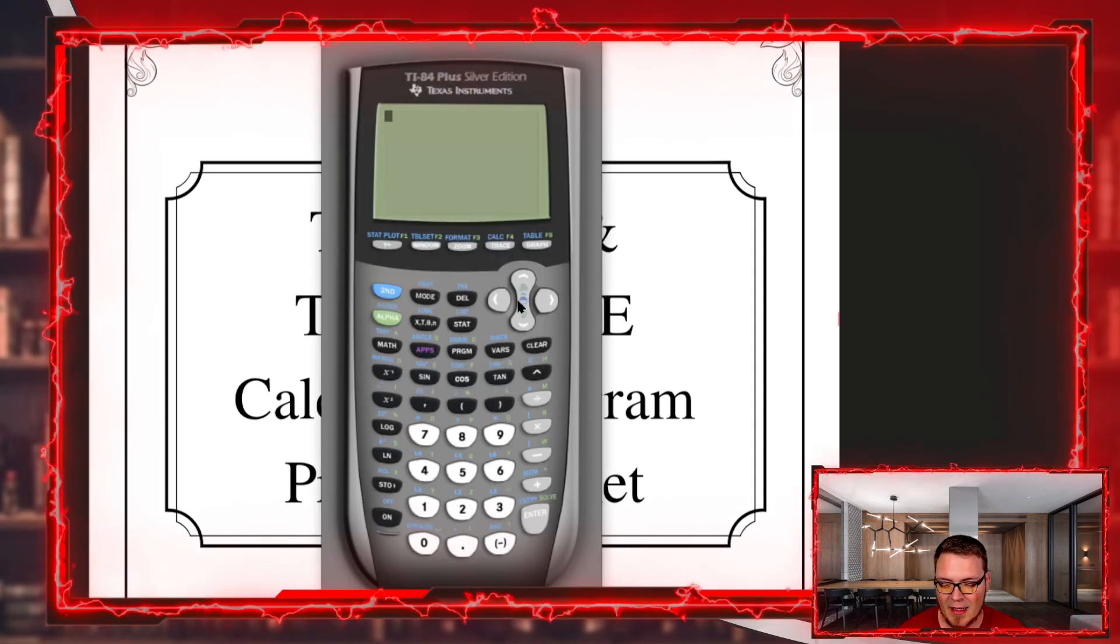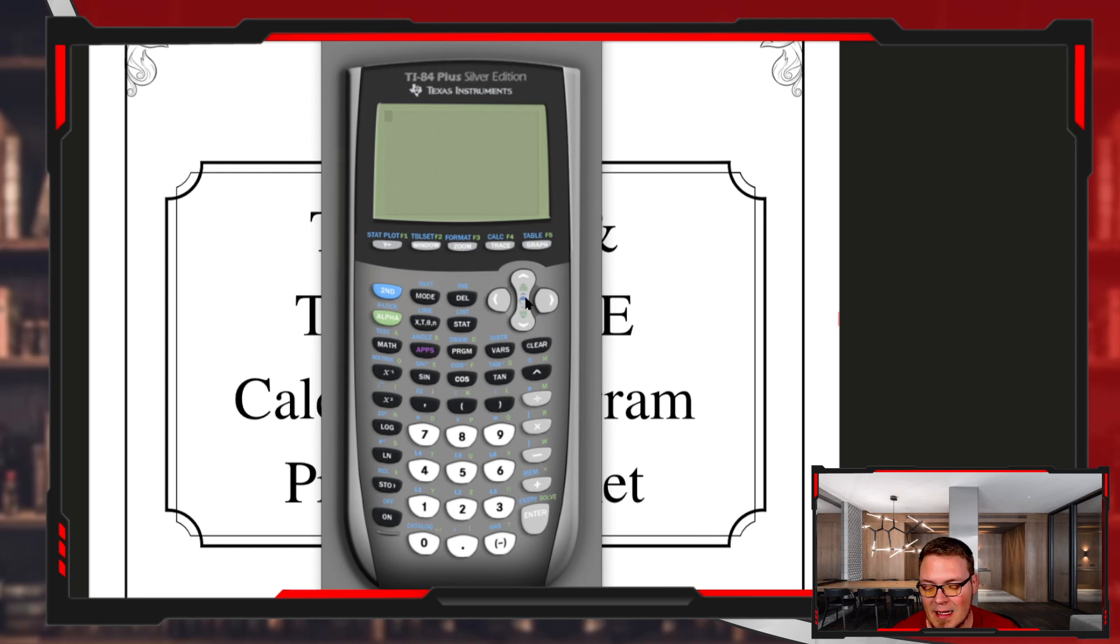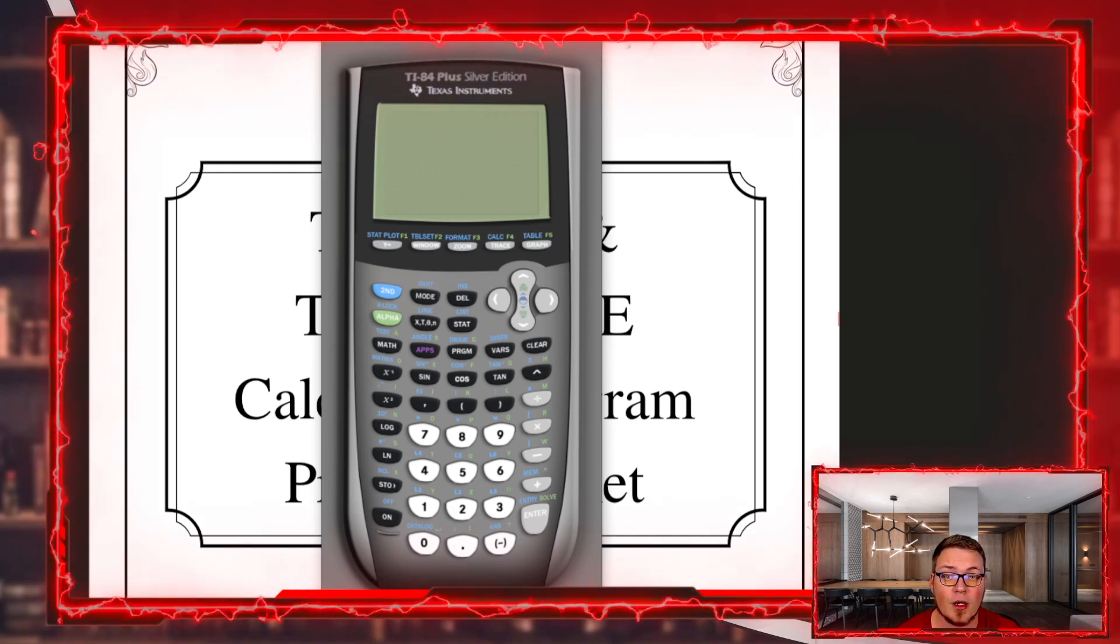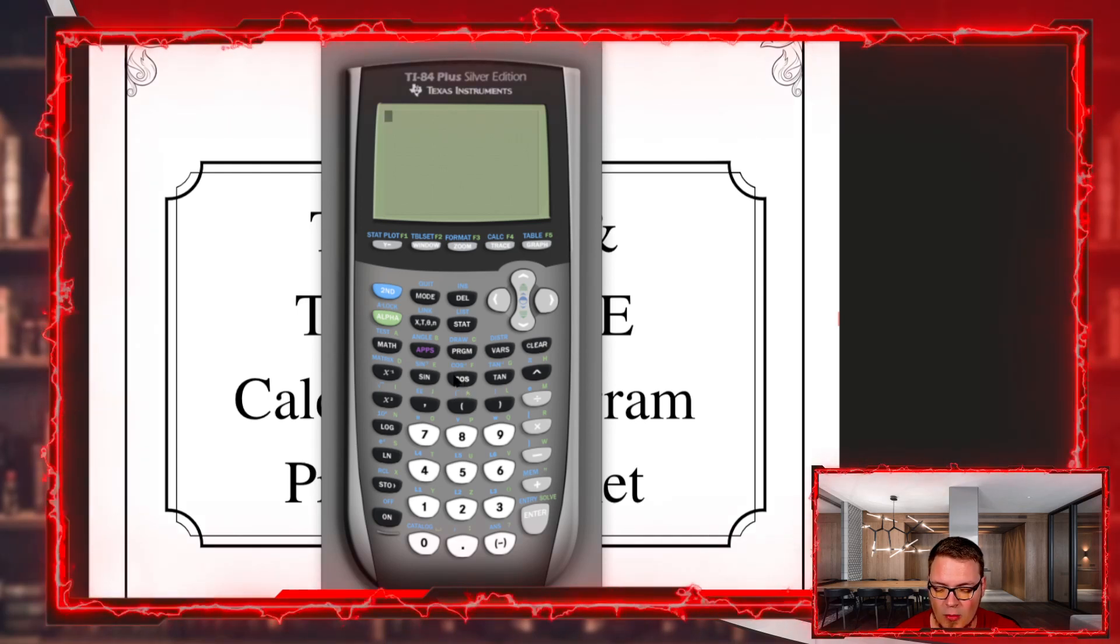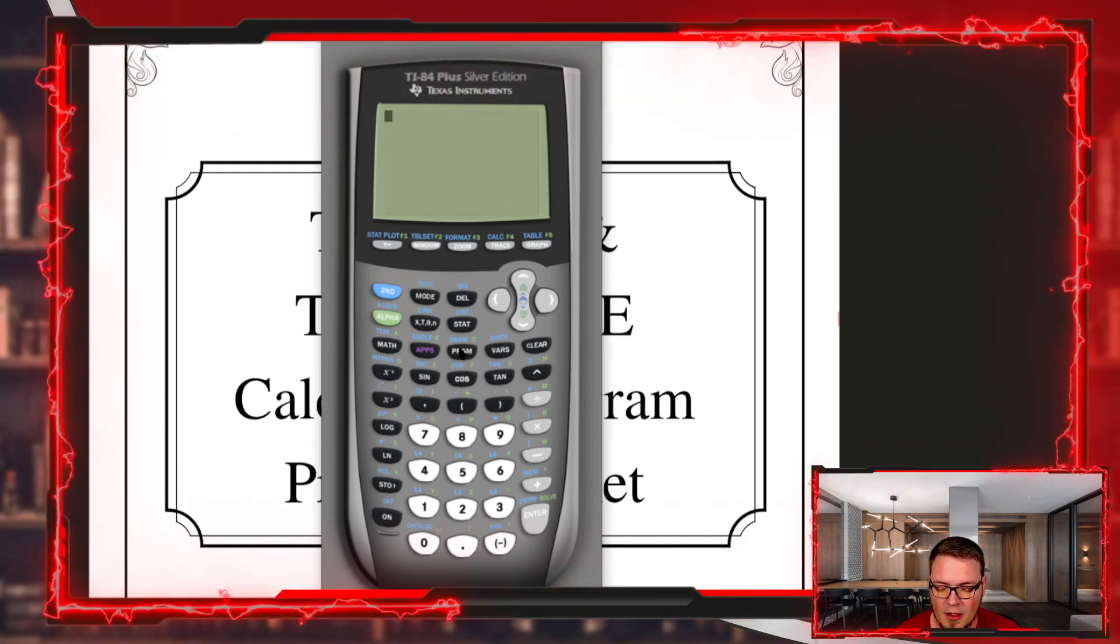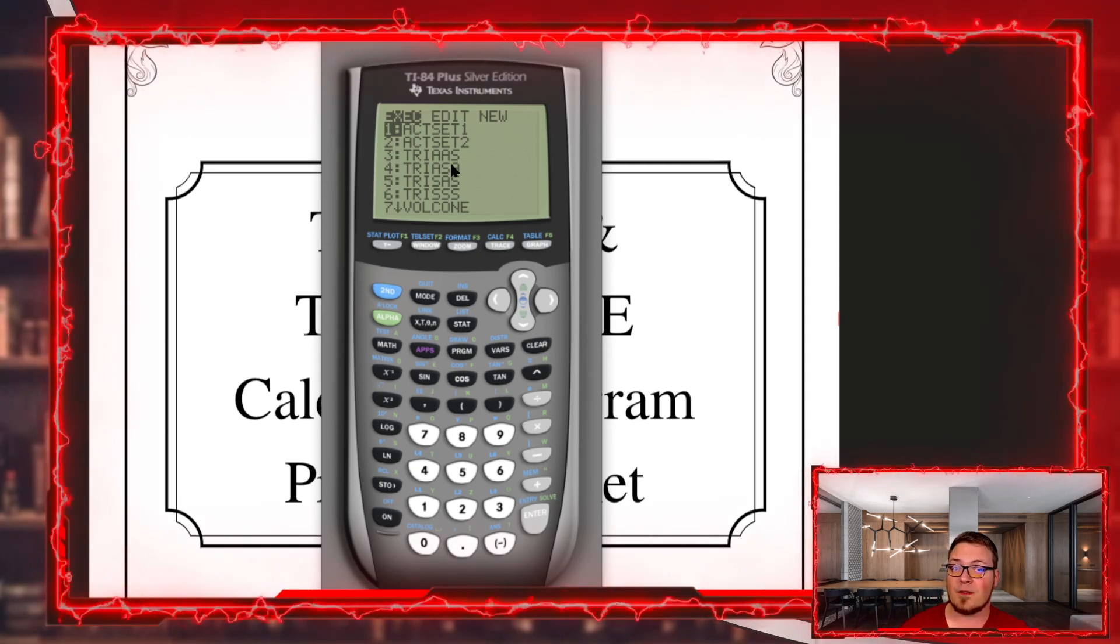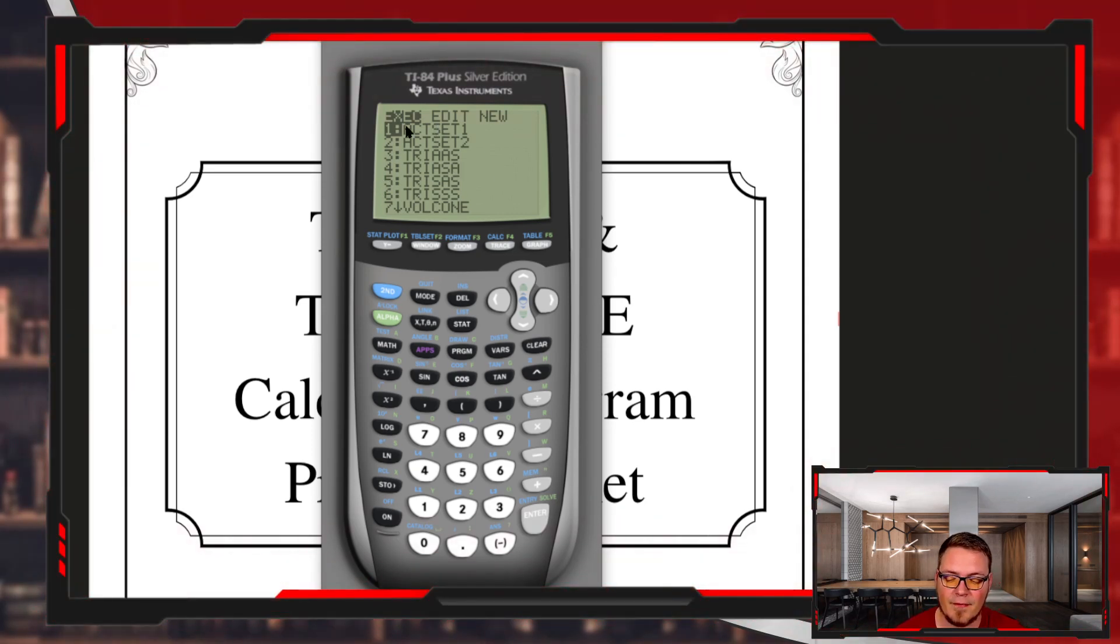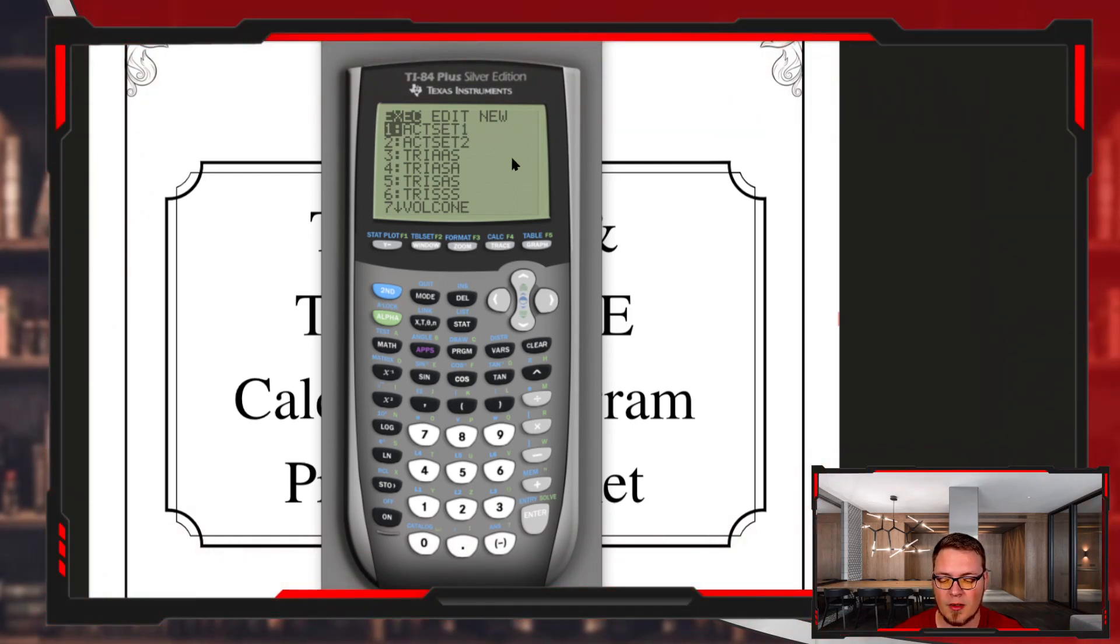So go ahead and grab your calculator and let's take a look at how to use the calculator programs and where they're located. They're going to be hidden right above the cosine button, the PRGM button. This is where all your programs are going to be found. For right now, for this video, we're just going to get started. Go ahead and select the very first program, which is ACT SET ONE.